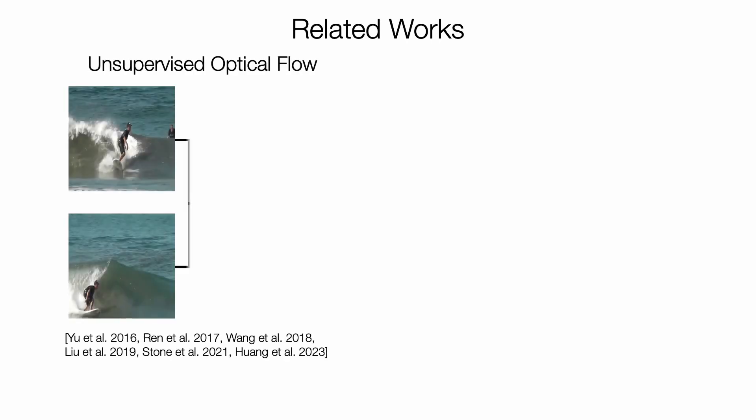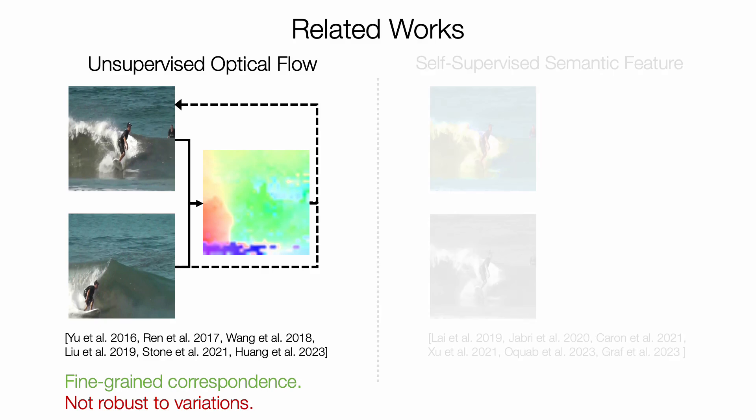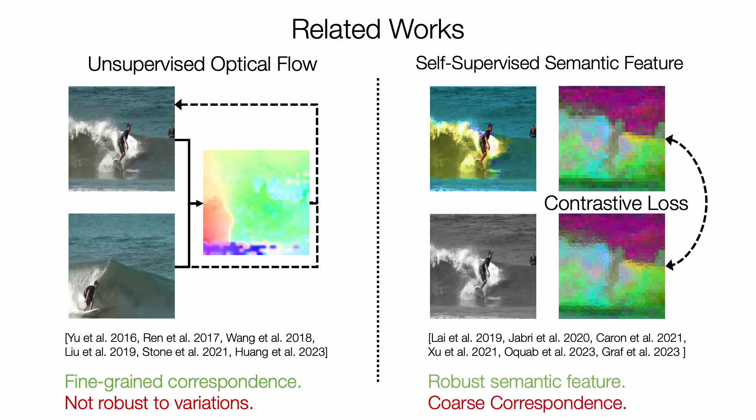There are two main streams of approach to unsupervised dense correspondence learning. The first is unsupervised optical flow, where dense optical flow is predicted between a pair of neighboring frames. The supervisory signal comes from warping losses. This method provides fine-grained pixel-level correspondence but is not robust to large variations. Another branch is self-supervised semantic feature learning, which employs self-supervised losses like contrastive loss to learn robust semantic features, but the correspondence from these features is usually coarse.